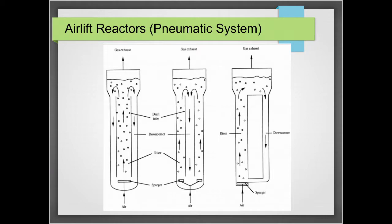One configuration under pneumatic systems is the airlift reactor. Airlift reactors use spargers, and the configuration of the spargers determines the direction of fluid movement. For example, a sparger in the middle induces radial air movement. With spargers on the sides, there is a downwelling movement in the center. A sparger at one side creates a circular up-and-down movement, which is how mixing is achieved.